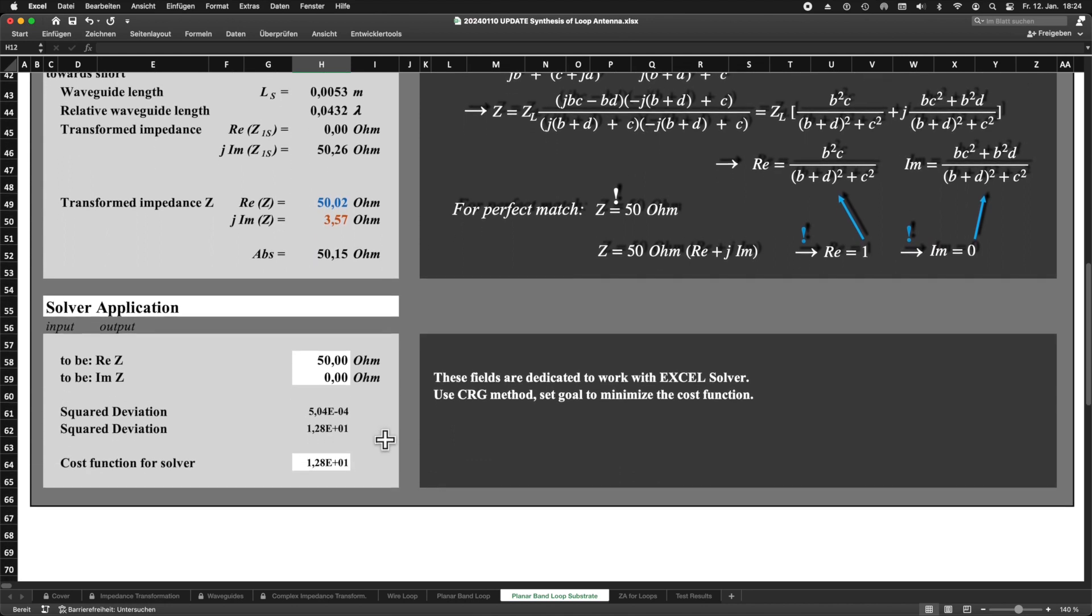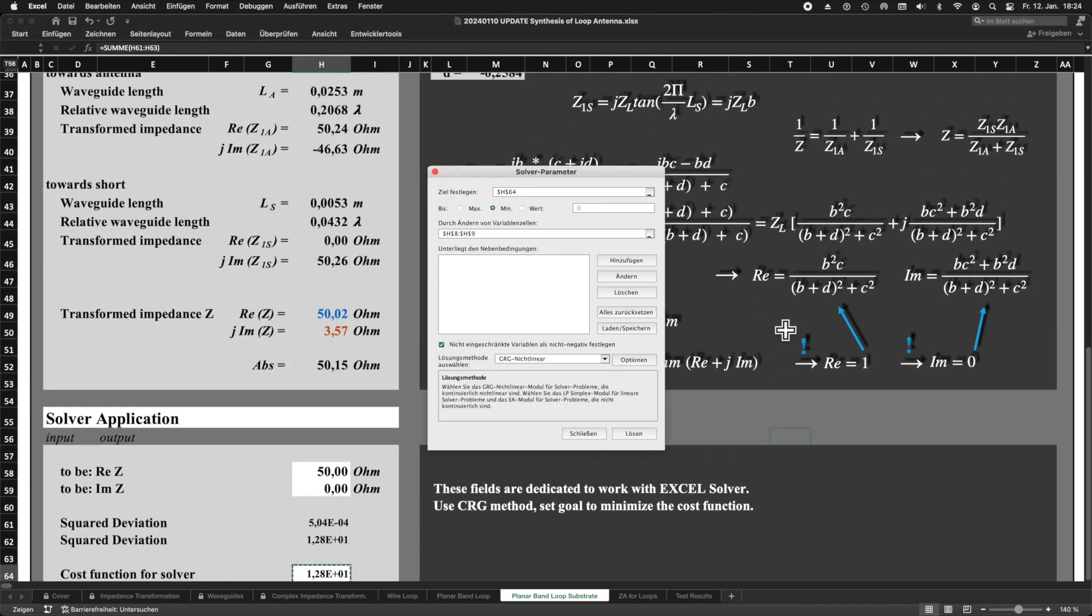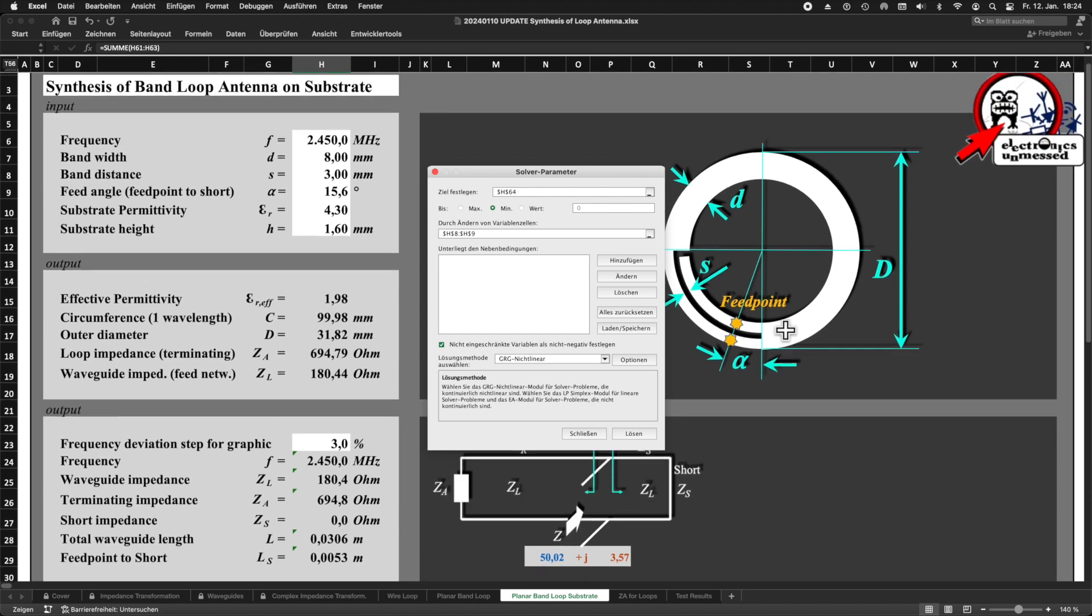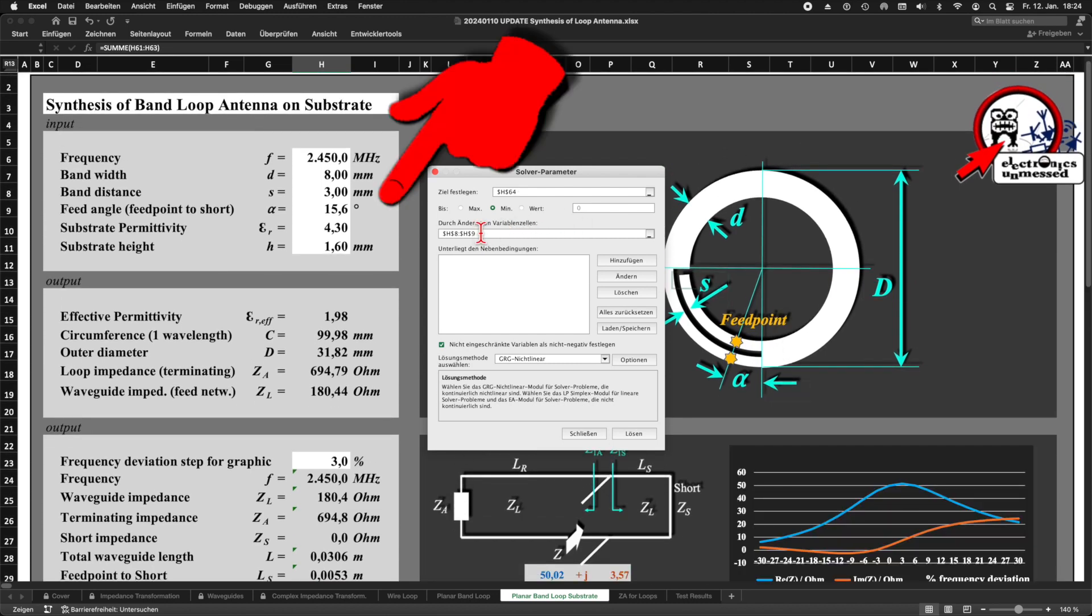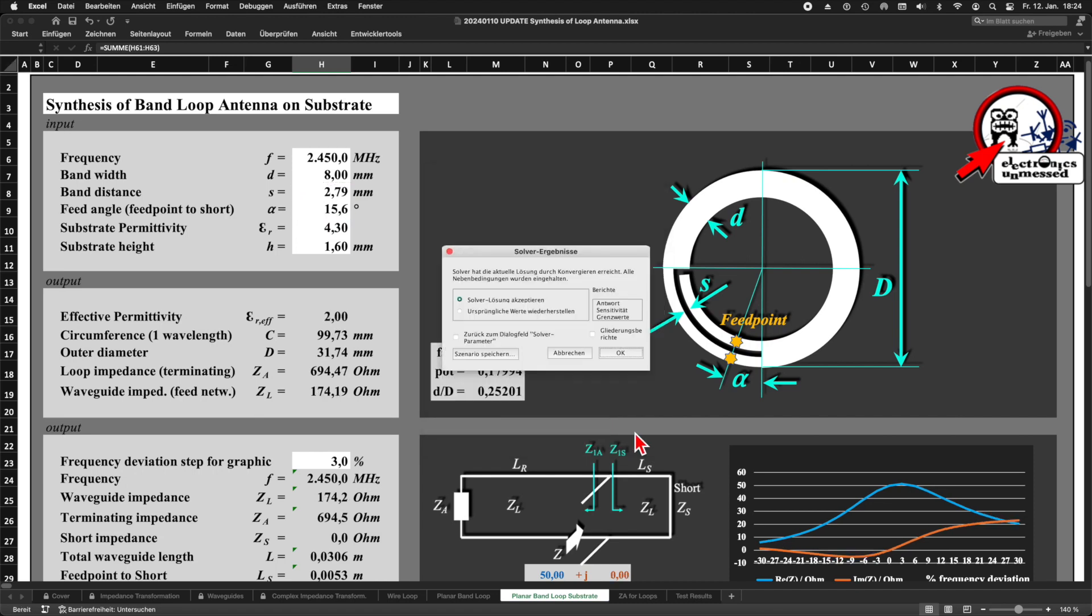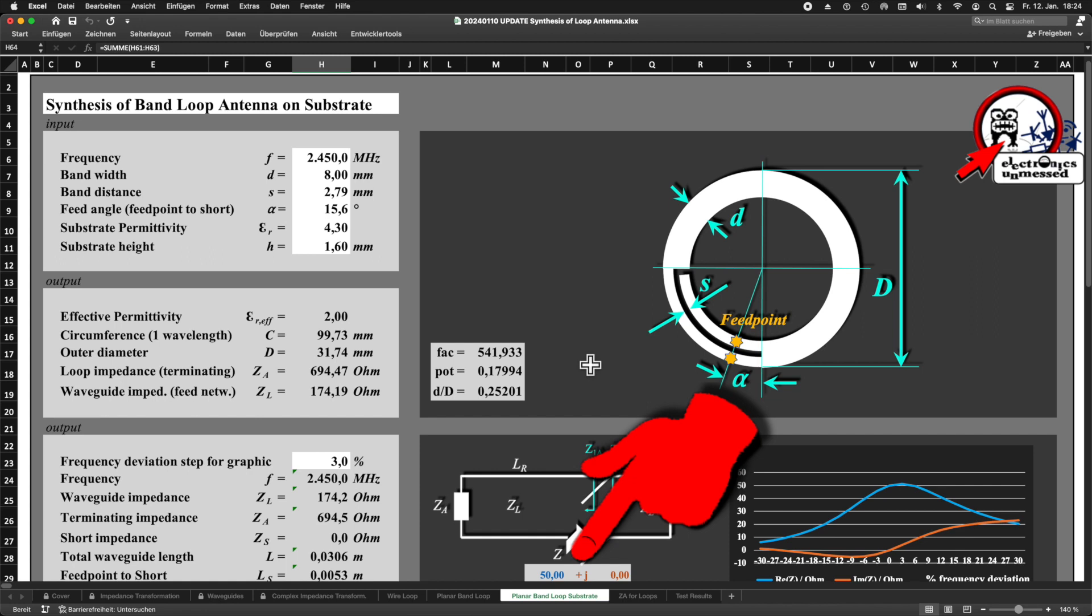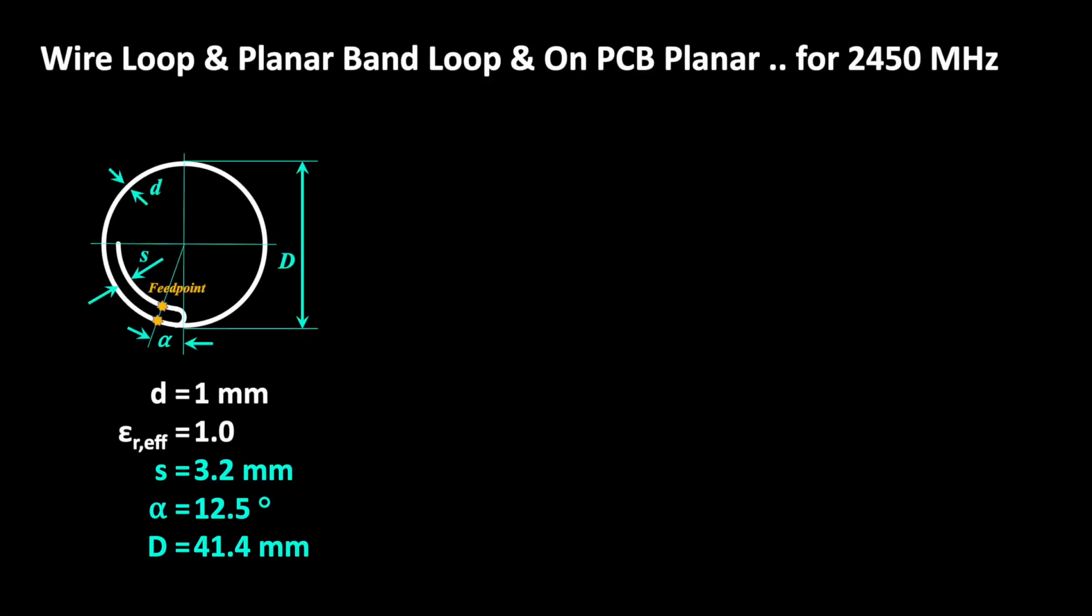Of course, we let the computer do the hard work. We start the solver and define that our cost function below should become zero. And we define here the variables that we want to vary, namely the slot width and the angle alpha. The computer then varies thousands of combinations of variables until it finds the best solution. Apparently there is a good solution here. The antenna matching is perfect, the slot width is within a feasible range and the angle alpha is okay.